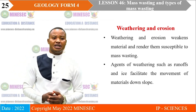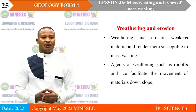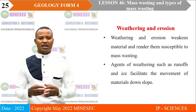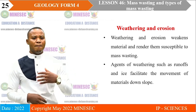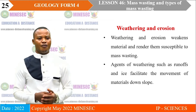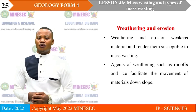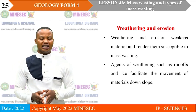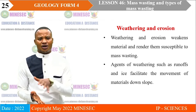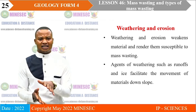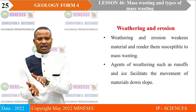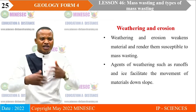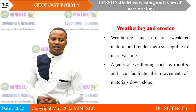Weathering and erosion will weaken materials, weaken the bonds and cohesions, and render the material more susceptible to downslope movements. Agents of weathering like runoff and ice will facilitate this movement downslope, especially when materials are deposited on ice. When temperature increases, the ice will melt and these materials will be mixed up with water, causing them to move easily downslope.